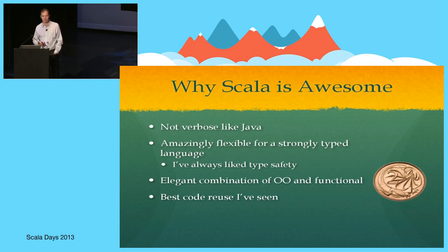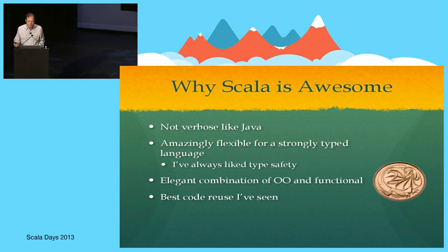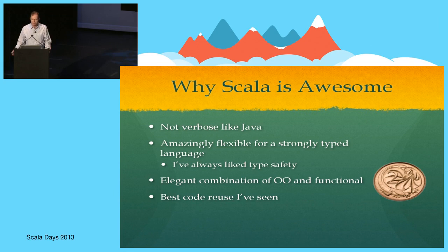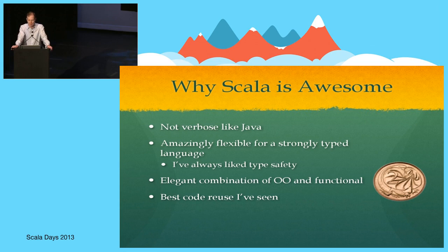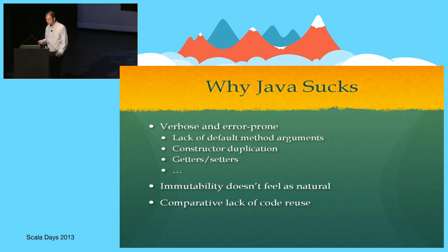Why is Scala awesome? I'm preaching to the converted here. It's obviously a very concise language — once you start programming in Scala, you really do notice just how verbose Java is. Scala has this incredible combination of flexibility with retaining strong typing, which really works for me. I've always been a fan of strong typing, and to have that while also having a very flexible syntax is impressive. There's also an elegant combination of object-oriented and functional capabilities, and I've seen the best potential code reuse that I've ever seen while programming in Scala.